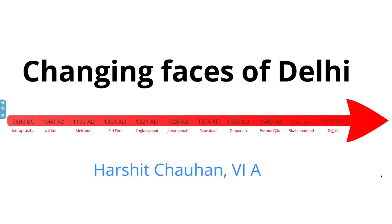Changing Faces of Delhi, presented by Harshit Chohan, VI A. Modern Delhi contains remnants of at least seven capital cities, and some say as many as 16. We have tried to cover most of them.